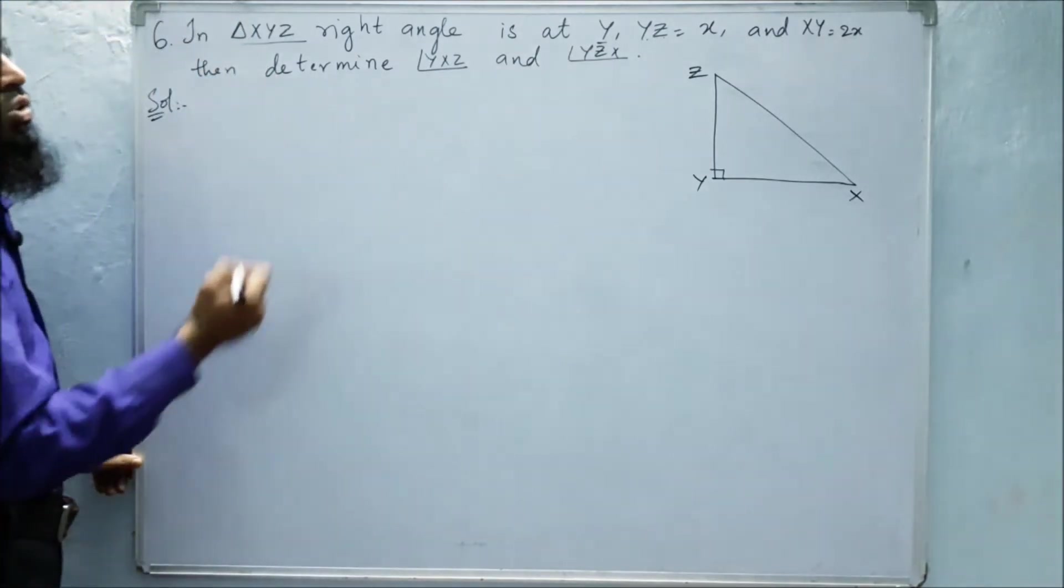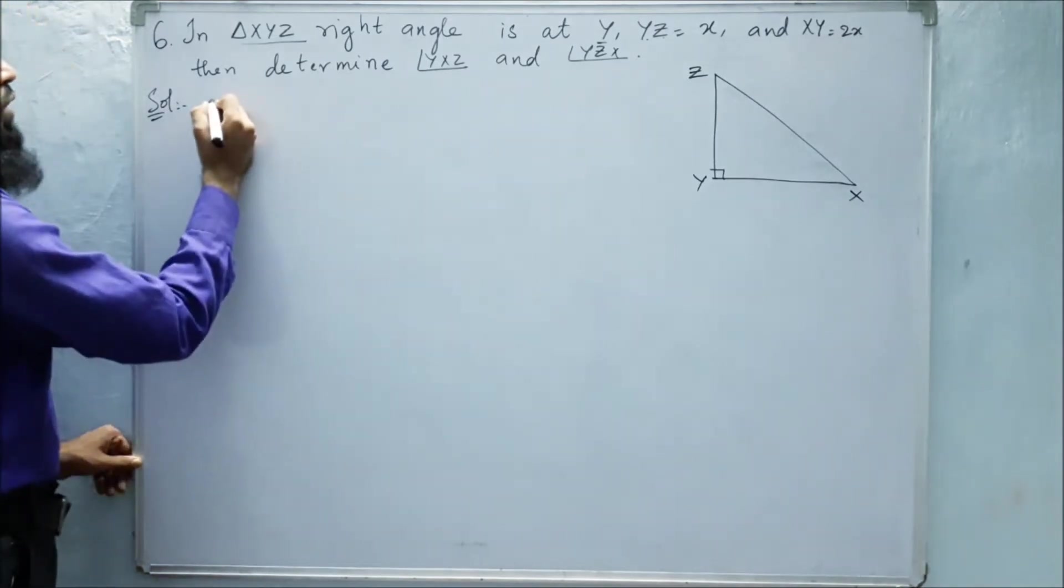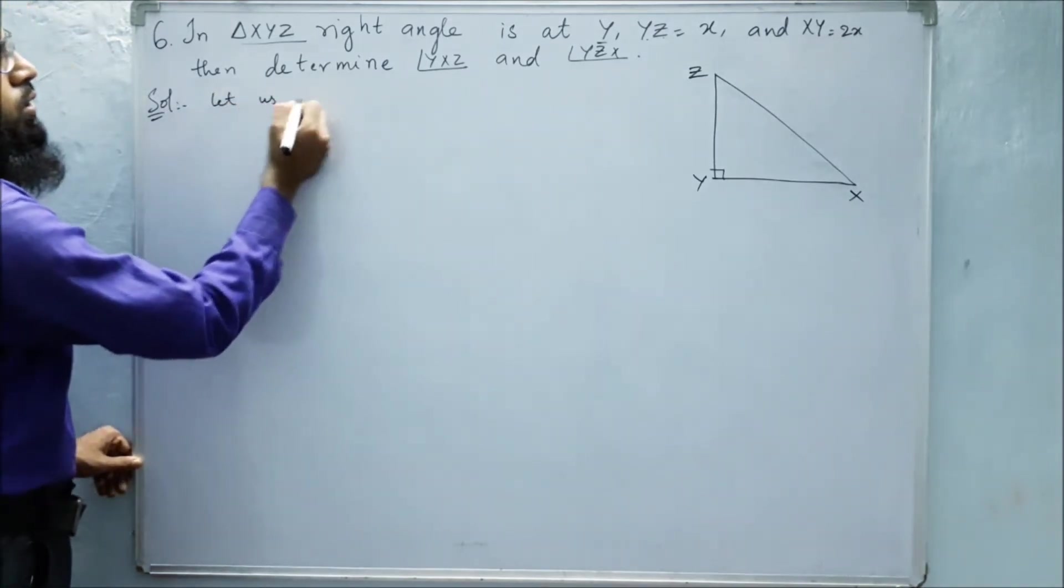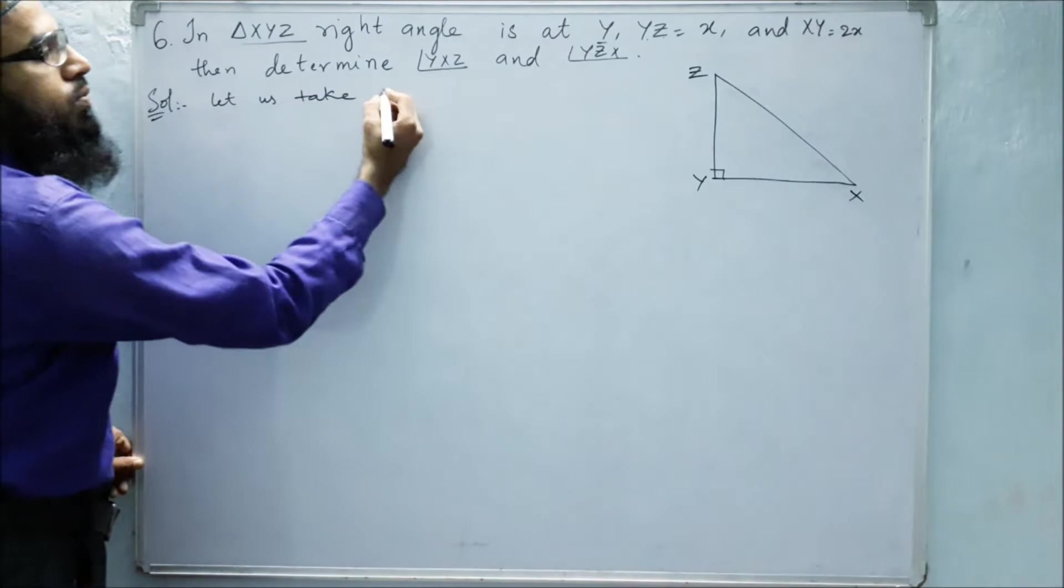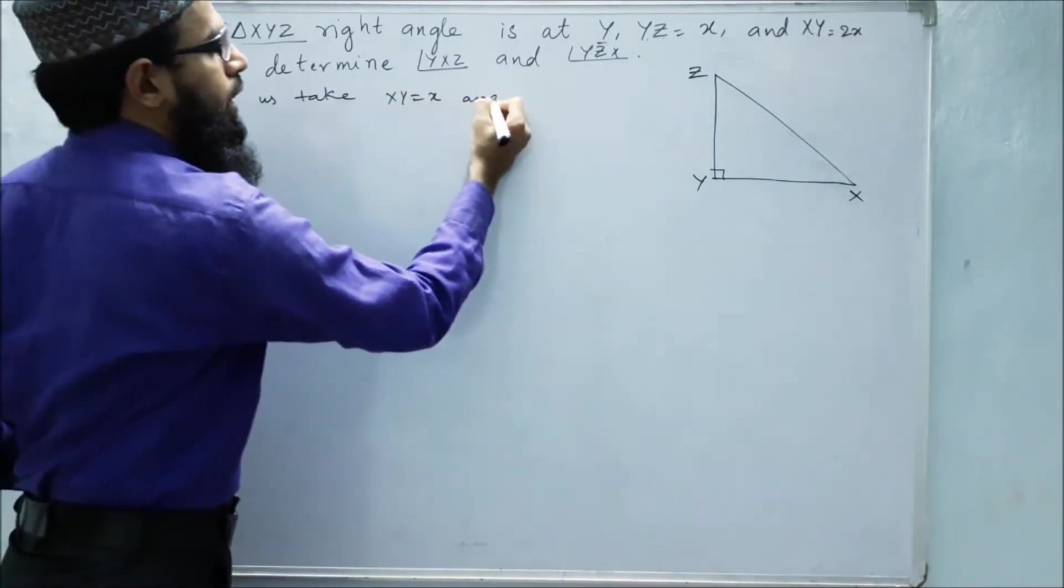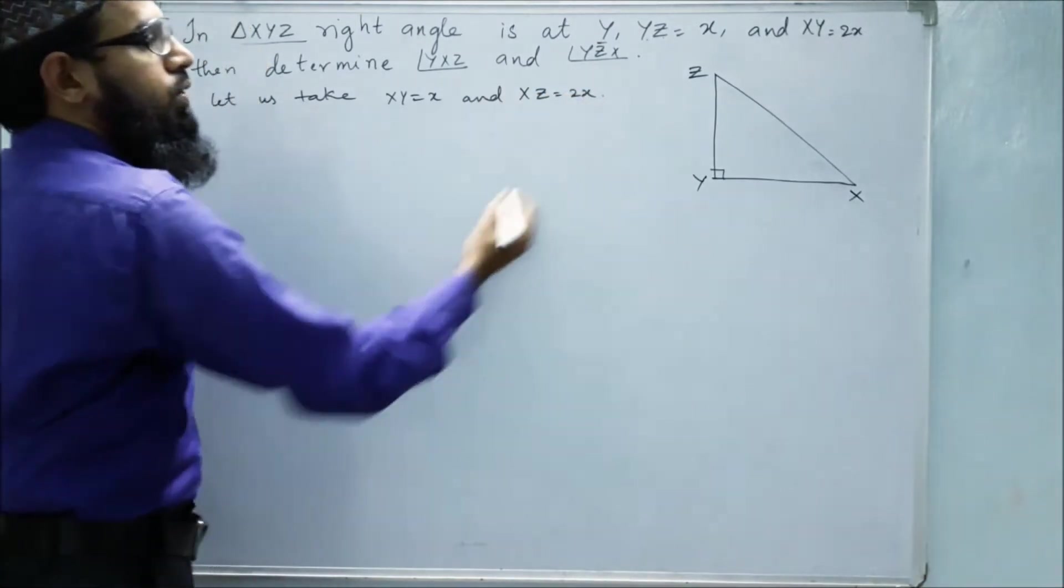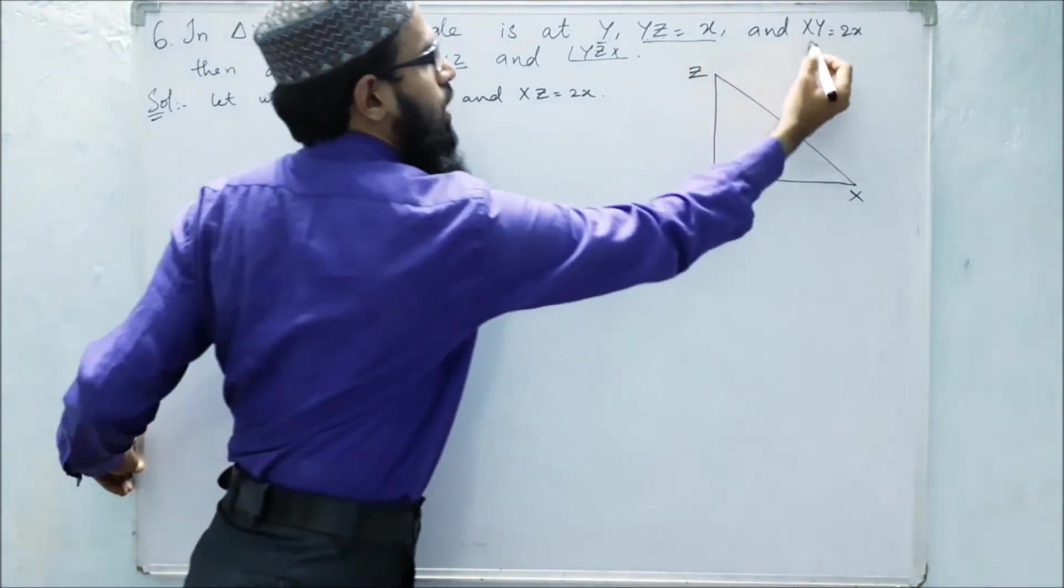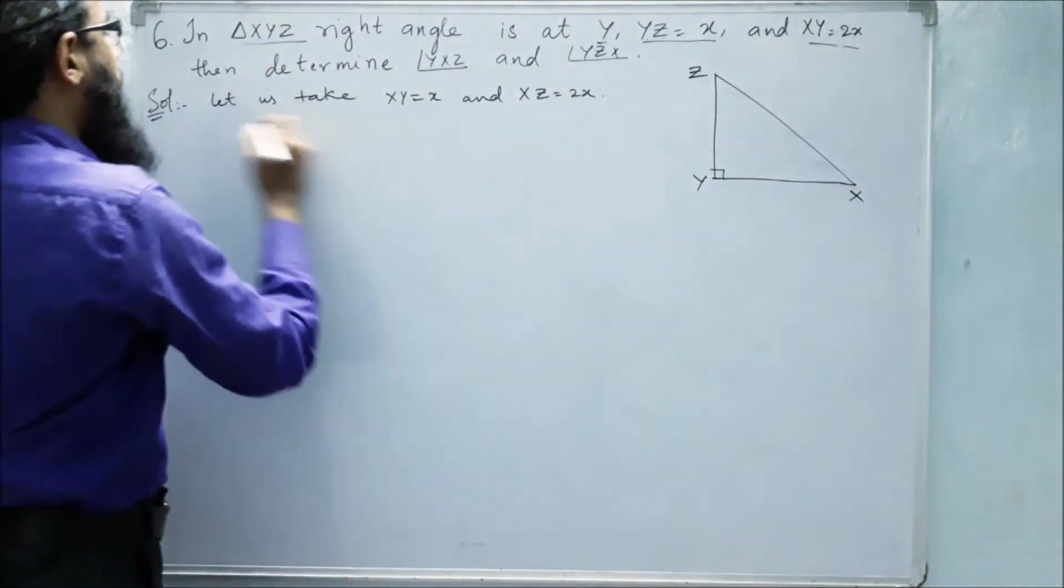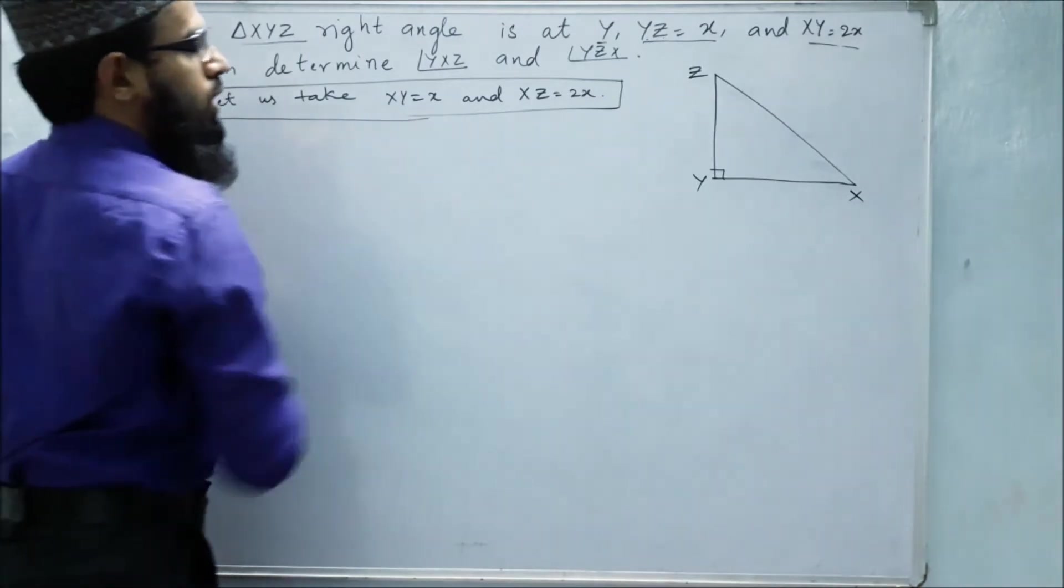So first of all, for solving this problem, we will consider some different values. We have to take, let us take XY equals x and XZ equals 2x. They have given these values, but to get a correct answer which is given in the reader, we have to take these values.